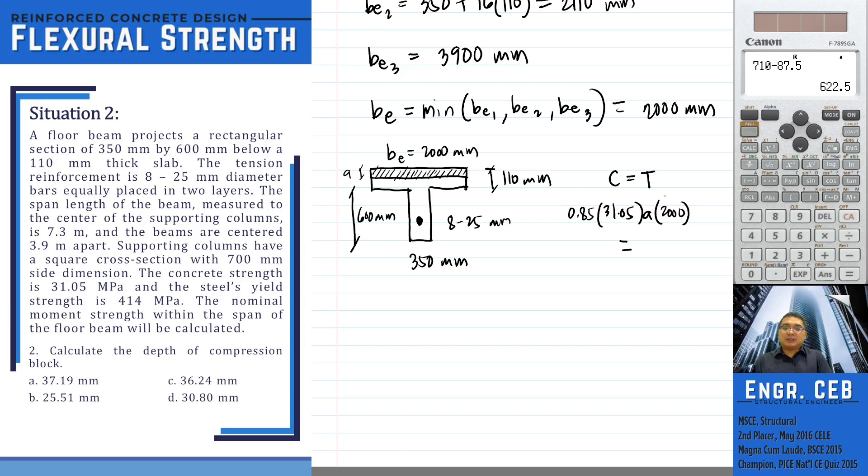So we equate this to ASFY, which is 8 pi over 4 times 25 squared times 414.